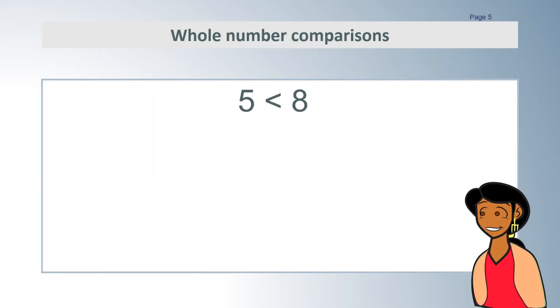First, let's look at whole number comparisons. We are all pretty good at telling which is larger out of single digit numbers. 5 is less than 8. When we start counting from 1, we get to 5 before we get to 8 so we know that 5 is less than 8.